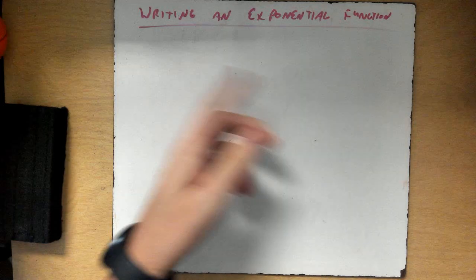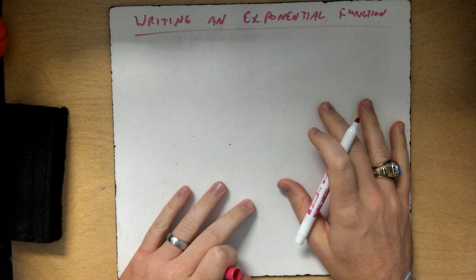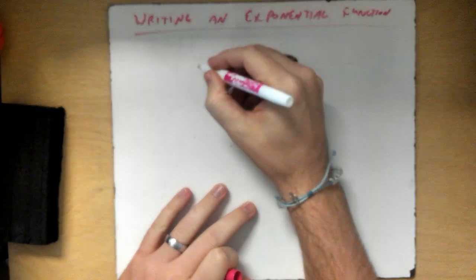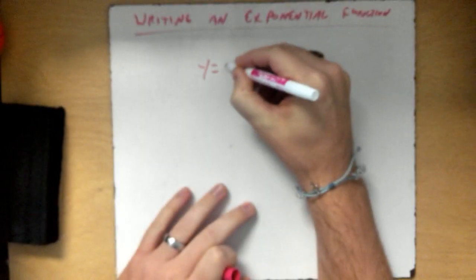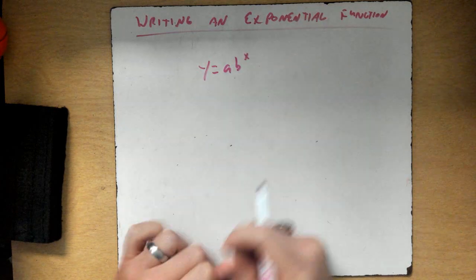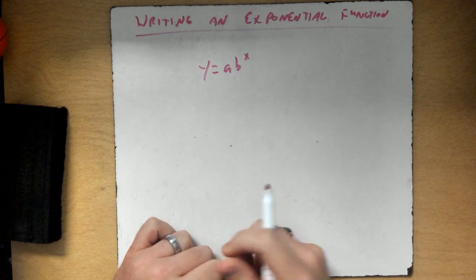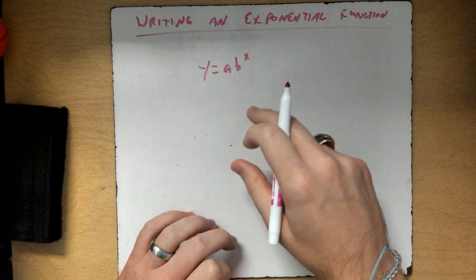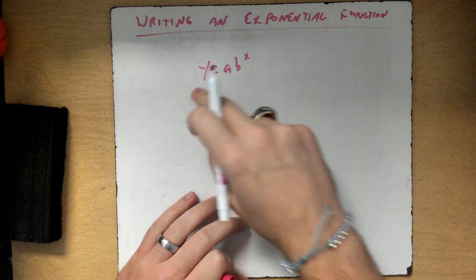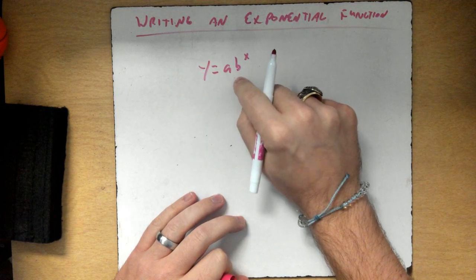Today's topic is writing an exponential function. Our equation for an exponential function is y equals a times b to the x power, where b is our ratio.